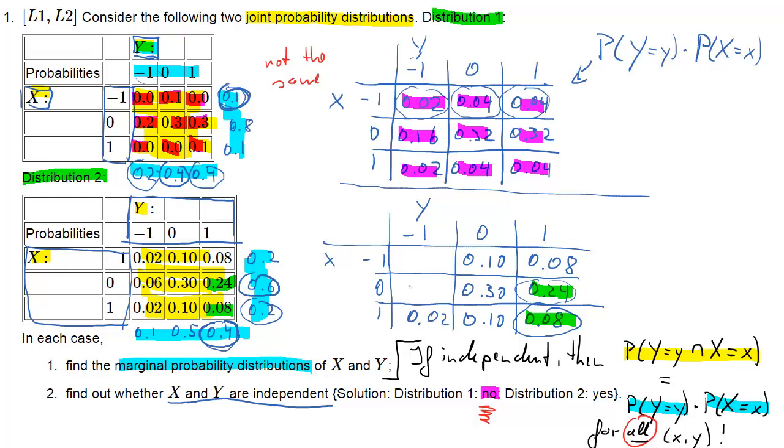And indeed that is the case. So here the conclusion is that indeed X and Y are independent.